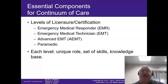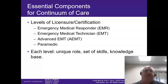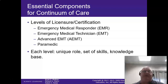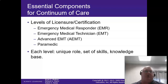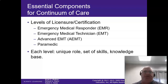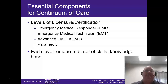The four levels of licensure: EMR is your basic level, basically a first-aid person. EMT adds a few drugs and more advanced splinting. Your advanced EMT — basically can start IVs, put in more advanced airways, and has a limited amount of drugs. And then your paramedic has a full complement — that's what we're studying to be.